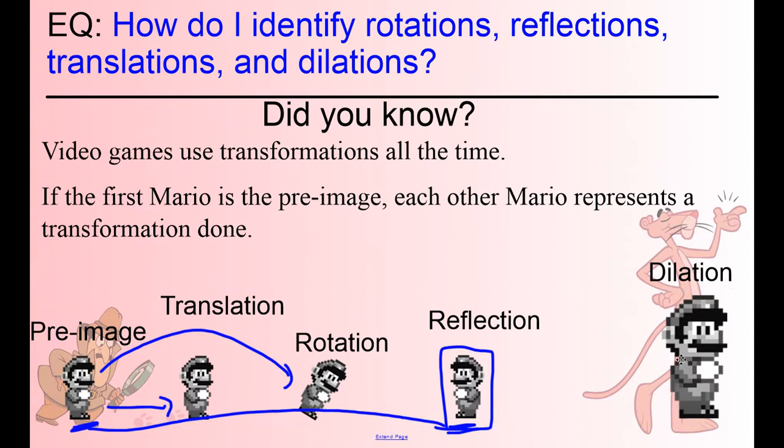And a dilation, the last one — dilation means to get bigger or smaller, to change the size. If you've ever been to the eye doctor and they put little drops in your eyes, they call it dilating your pupils. They're making your pupils bigger so they can look in the back of your eye easier. It makes the hole in your eye bigger. So a dilation is if Mario gets bigger, or even if he gets smaller — if he gets shrunk — that's still a dilation.